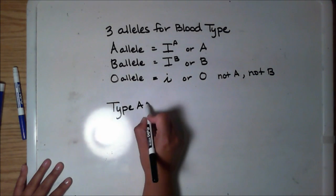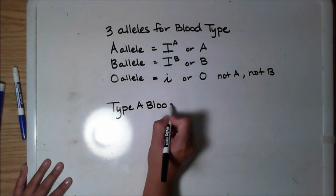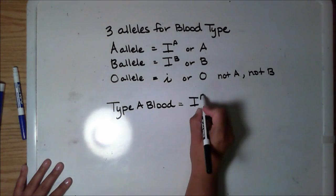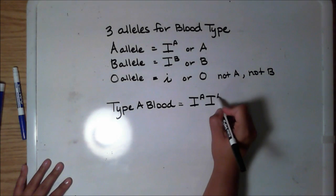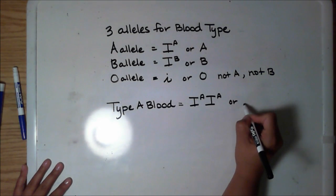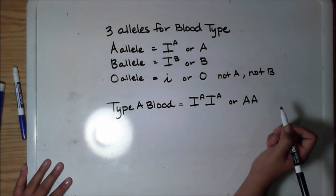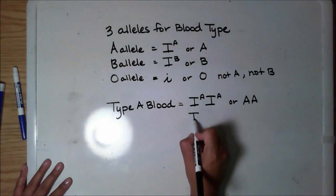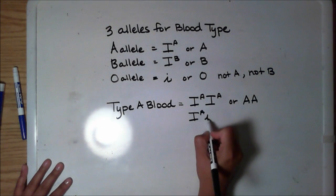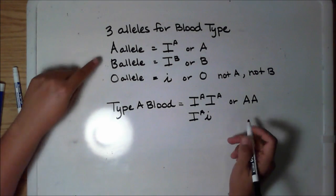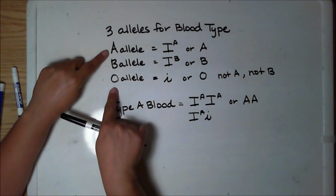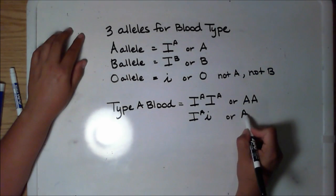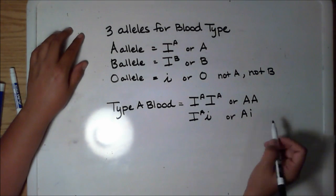For someone who has type A blood, they have to inherit two alleles for that type A blood. They can be homozygous for type A, inheriting two dominant alleles, or they can be heterozygous for type A, inheriting one A allele and one O allele, because type A dominates O.